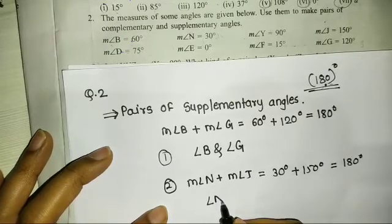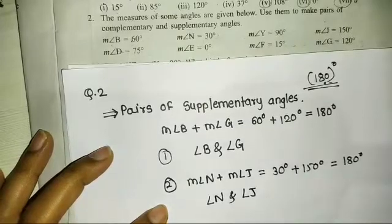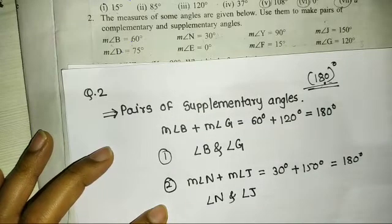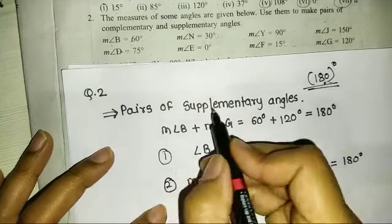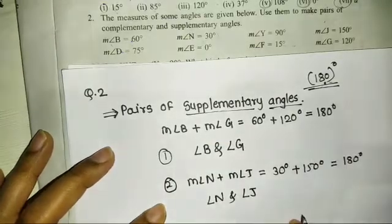Angle N and angle J are supplementary angles. Okay? This is the supplementary angles pair.